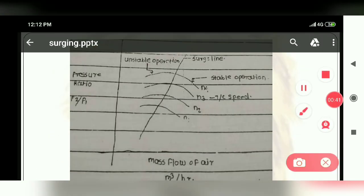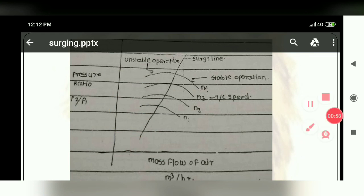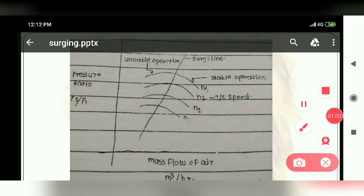So if we look at this graph, this graph is P2 by P1 pressure ratio and mass flow rate. A particular pressure ratio, a critical value of mass flow rate which is left hand side, this is unstable operation. We call this line left hand side operation unstable and right hand side operation stable.